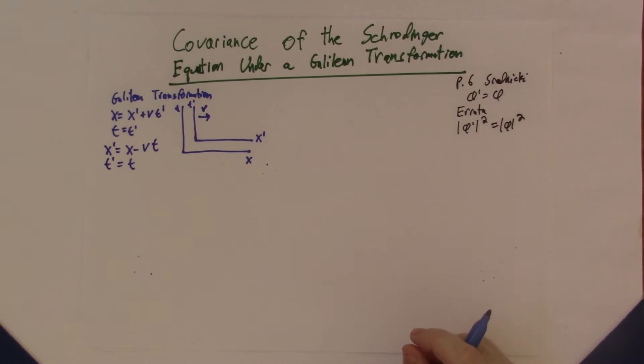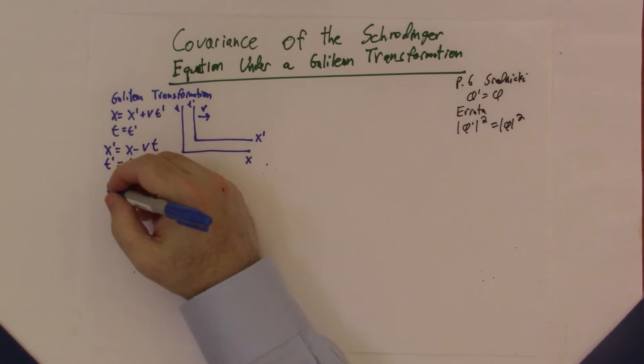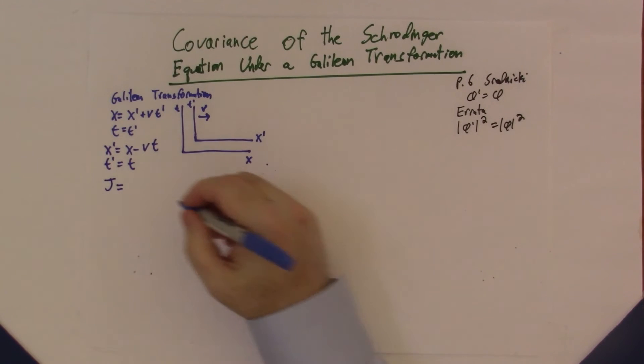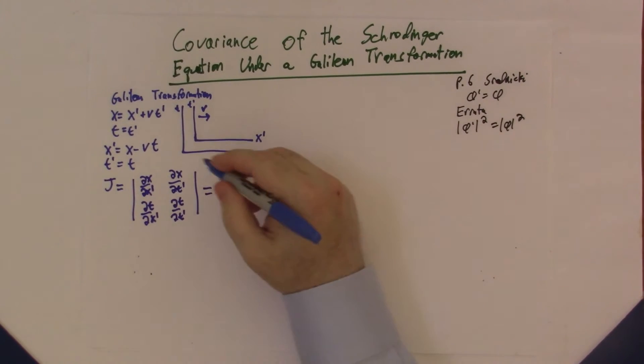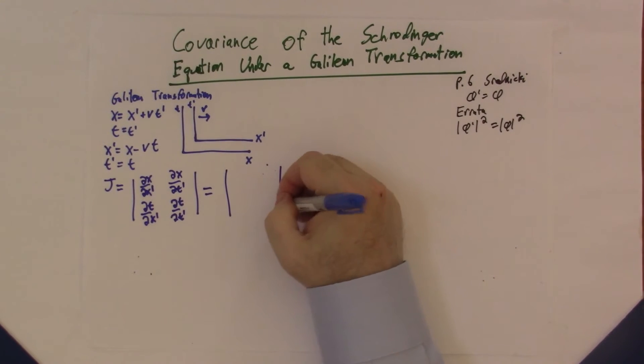Now, when I get a new transformation, one of the first things I want to calculate is the Jacobian of the transformation. The Jacobian is simply given by the absolute value of the matrix of partial derivatives. So that's ∂x/∂x', ∂x/∂t', ∂t/∂x', ∂t/∂t'. Using the transformations, this is very easy to calculate: the matrix is [1, v; 0, 1] and this equals 1.